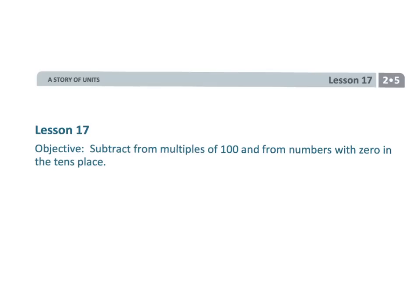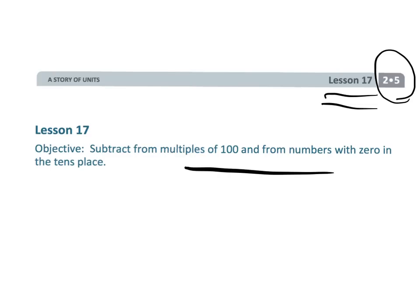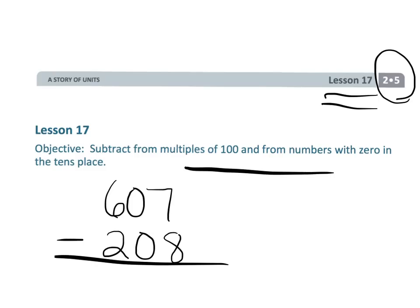That wraps up this lesson — Grade 2, Module 5, Lesson 17 — where we used the standard algorithm to subtract problems with zeros, like 905 minus 606 and 607 minus 208.